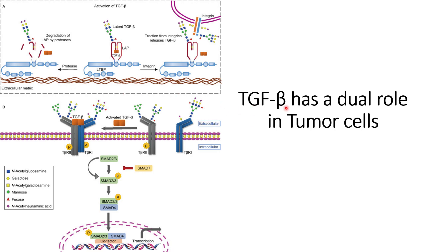Let us understand how TGF-beta gets activated in the system. Latent TGF-beta is bound with LAP, and it can be activated by two ways. The first is proteolytic cleavage of this LAP protein, which leads to the latent TGF-beta becoming free and able to interact with the cell surface membrane.